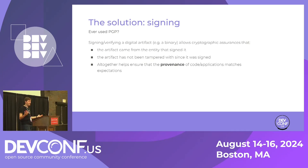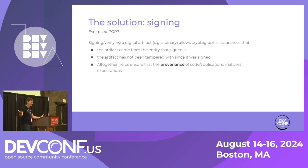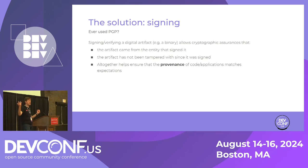That served as a bit of a wake-up call that we should probably be doing something about this. The solution is actually pretty well understood — it's signing. It's cryptographic signing. If you've ever used PGP or seen PGP signatures on a software download, that's what it is. Signing a digital artifact, like a file or application, provides cryptographic assurances that the artifact came from the entity that signed it.